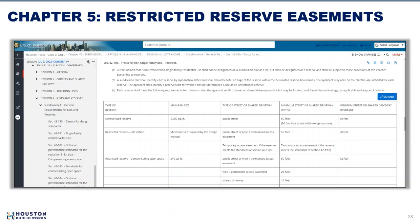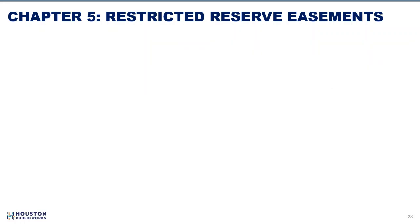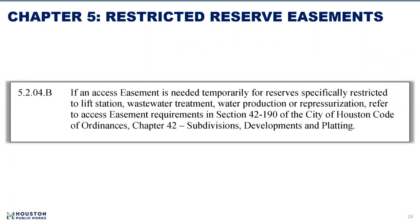Recently, the Planning and Development Department updated the City of Houston Code of Ordinances regarding tracts for non-single-family use reserves. As shown here, reserves for lift stations may require a temporary access easement. An informative reference paragraph 5.2.04B was added to Chapter 5 as a link to this ordinance requirement for lift stations, wastewater, and water facility easements.